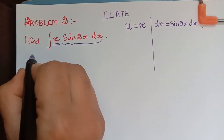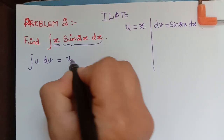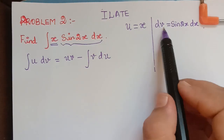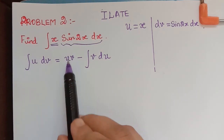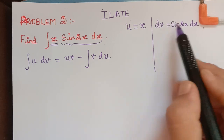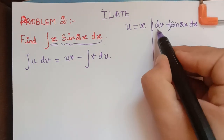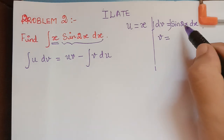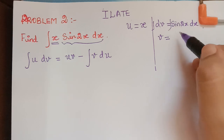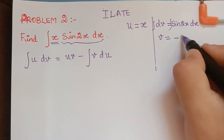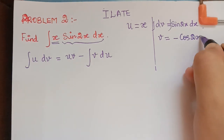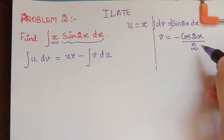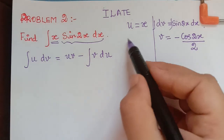We know that the formula is: integral u dv equals uv minus integral v du. After making the choice of u and dv, we have to find v in this formula. v is found by integrating dv on both sides. When we integrate, the integral of sin 2x is minus cos 2x divided by the constant 2.